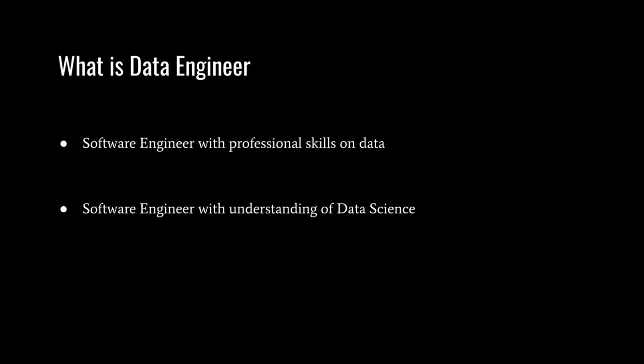From the previous data pipeline diagram, we can conclude that a data engineer is first a software engineer — a software engineer with professional skills on data. The second point is that a data engineer is a software engineer with understanding of data science, because if you don't understand data science you will not do the work very well, since most of the work of a data engineer is for data science — providing clean and organized data to data scientists, or building tools for them.